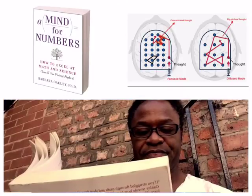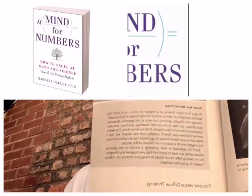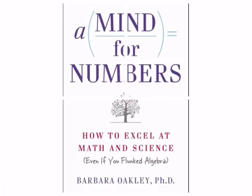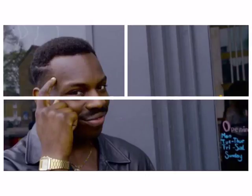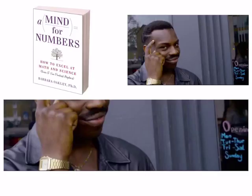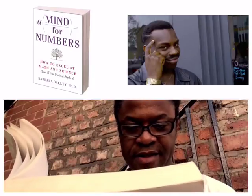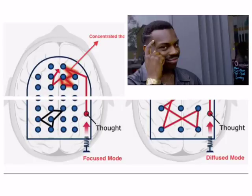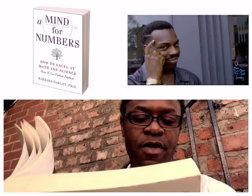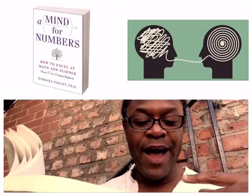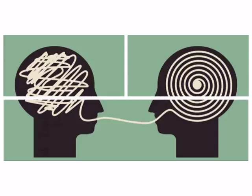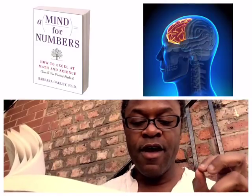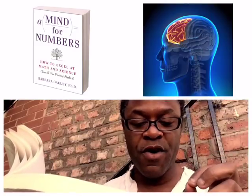Focus vs. Diffuse Thinking. Since the very beginning of the 21st century, neuroscientists have been making profound advances in understanding the two different types of networks that the brain switches between — highly attentive states and the more relaxed resting state networks. We'll call the thinking processes related to these two different types of networks the focus mode and diffuse mode respectively.